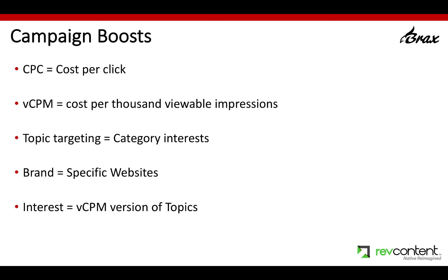So first, we're going to talk about campaign boosts. There's a few things to be aware of. There's CPC for cost per click. There's VCPM, which is essentially viewable impressions, and this is on a CPM basis. Topic targeting is for basically category interest. Brand targeting is for specific websites. And then interest is something that you can only do with VCPM — it's just a variation of topics.